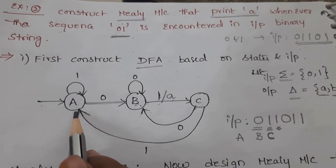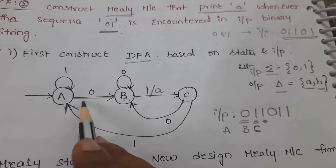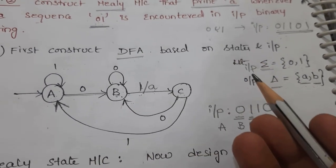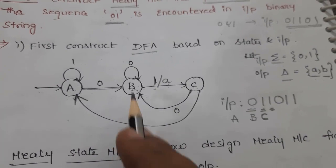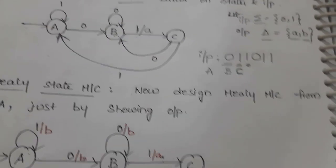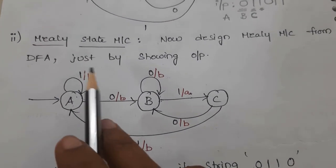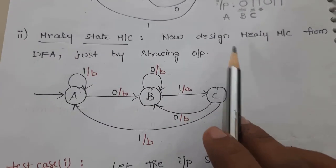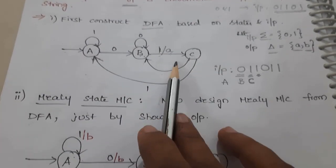For each and every state there are two possible inputs. If 0 is the input, we determine whether it stays in that state or moves to another state — this must be clearly indicated in the state diagram. Now let us see this with the output, constructing the Mealy machine from the basic DFA we have drawn.